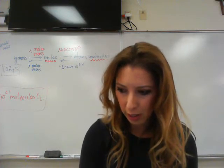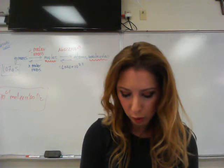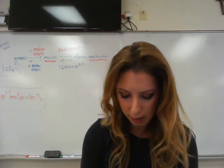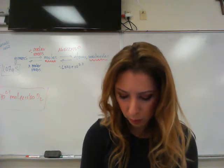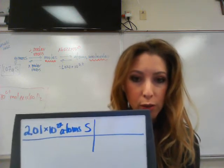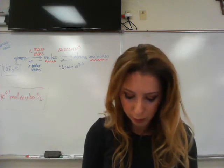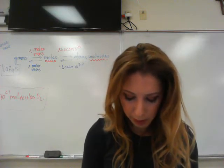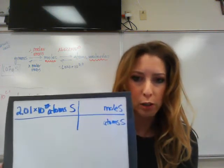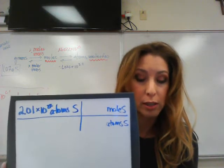Let's take a look at student exercise 6: What is the mass in grams of 2.01 times 10 to the 22nd atoms of sulfur? You're going to put 2.01 times 10 to the 22nd atoms of sulfur in the upper left-hand corner. Put atoms of sulfur on the diagonal, and we have to go to moles of sulfur first, so you put that up on top. Remember, one mole of anything equals 6.022 times 10 to the 23rd things.